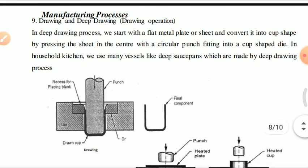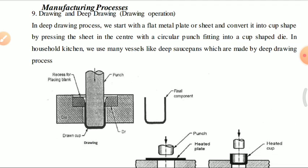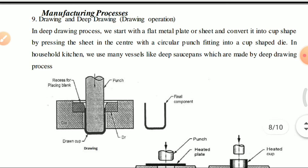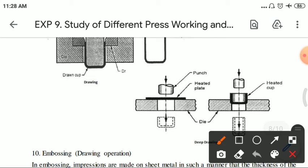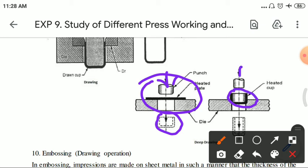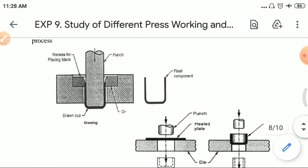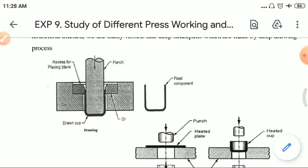Drawing and deep drawing: in the drawing process we start with a flat metal plate and convert it into a cup shape using a punch and die. If you operate once, it is called simply drawing. If the cup shape is extended further — increasing the diameter and depth — it is called deep drawing.